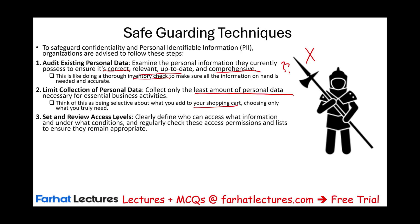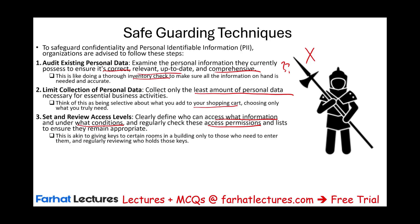Third, set and review access levels: clearly define who can access what information and under what conditions. On a regular basis, check the access permissions and lists to ensure they remain appropriate. This is similar to giving keys to certain rooms in a building — only give those keys to people who have business in that room, and regularly review who holds those keys.